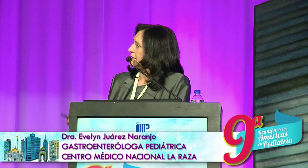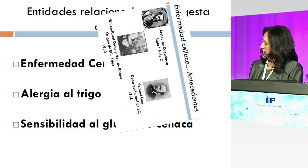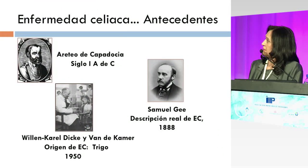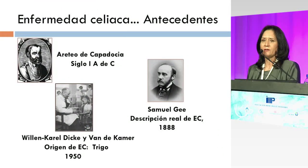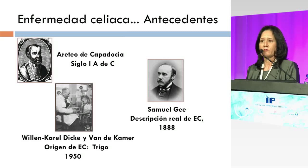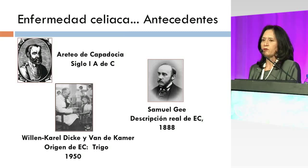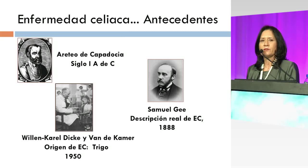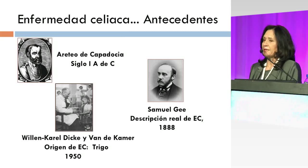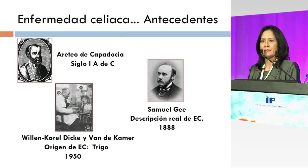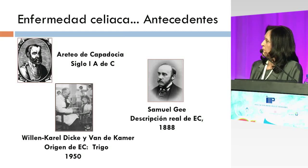Les quiero hablar brevemente acerca de la enfermedad celíaca porque es una de las indicaciones principales de restringir el gluten en los niños. Ya sabemos que desde Areteo de Capadocia, desde el siglo I antes de Cristo, este médico ya pensaba que había una relación de esas enfermedades con el pan, pero fue hasta 1888 que Samuel G hizo una descripción muy detallada y exacta, que todavía es vigente en la actualidad, acerca de la enfermedad celíaca y desde ese momento lleva ese nombre.